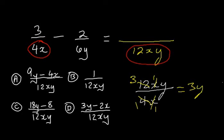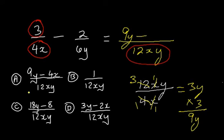We take the 3y and we multiply it by the corresponding numerator. So, 3y times 3 will give us 9y. Already, it looks like the answer is going to be A.